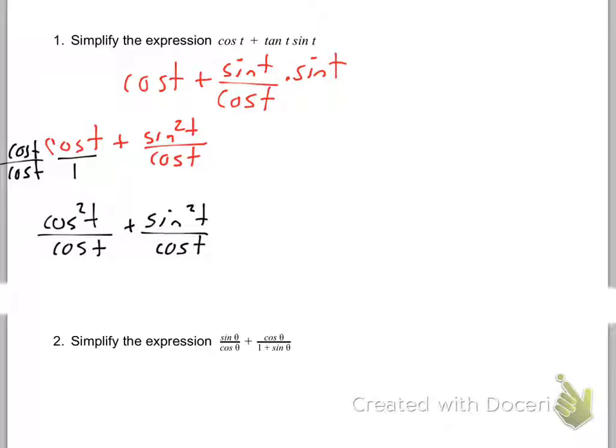Now I've got a fraction plus a number there. Let's get a common denominator. So what do I need to multiply cosine by? If I multiply cosine over cosine, then I can get cosine squared t over cosine t plus sine squared t over cosine t.